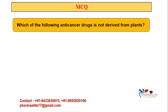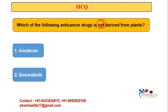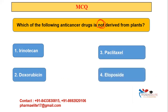'Which of the following anti-cancer drugs is NOT derived from plants?' Options: irinotecan, doxorubicin, paclitaxel, or etoposide. Irinotecan, paclitaxel, and etoposide are all derived from plants, whereas doxorubicin is not — it is derived from the bacterium Streptomyces. We will be covering all these drugs in further videos, including their biological sources and pharmacognosy aspects. Stay tuned.